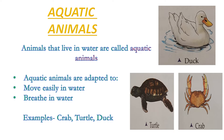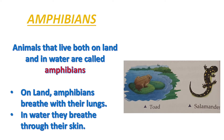What are aquatic animals? Animals that live in water are called aquatic animals. Aquatic animals are adapted to move easily in water and breathe in water. Examples: crab, turtle, duck, etc.